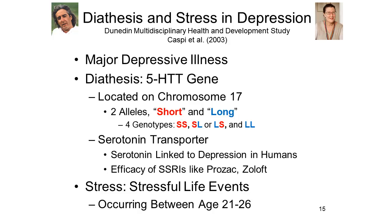Caspi et al. also explored the role of life stress in depression by counting the number of stressful events occurring in the life of each subject between ages 21 and 26. In psychology, a stressful event can involve lots of different things — getting divorced, a death in the family, but also getting married and having a birth in the family. It's all stress.